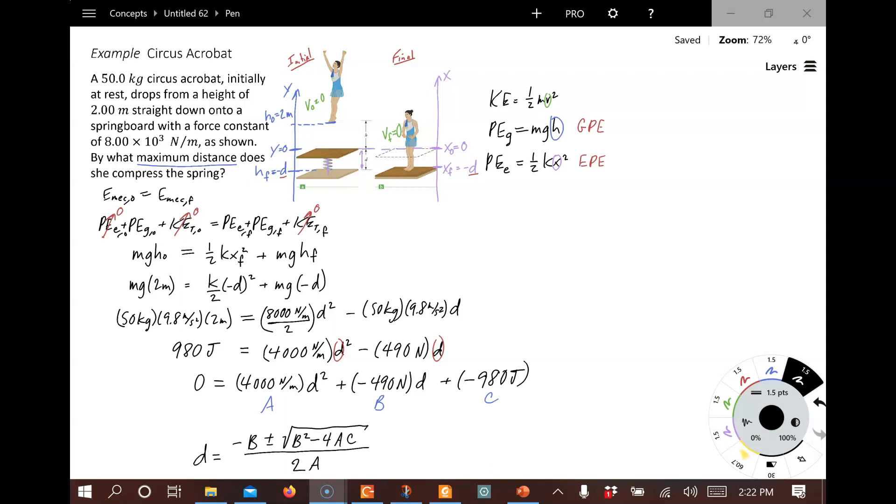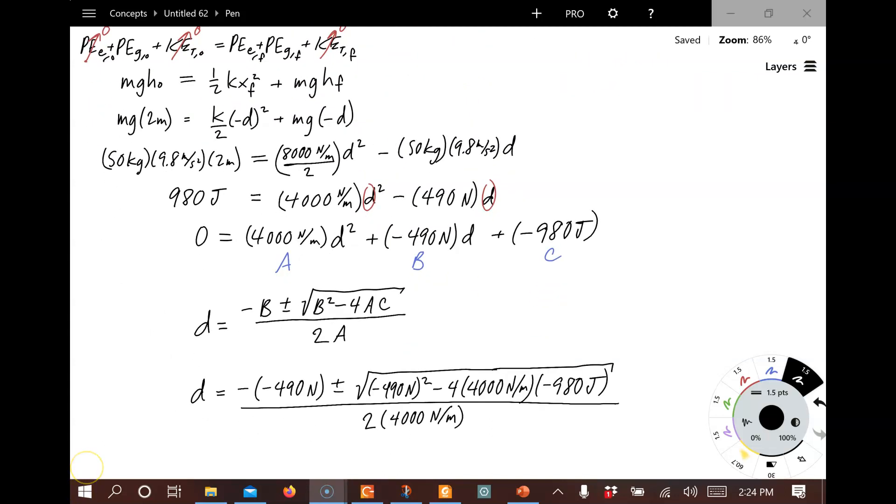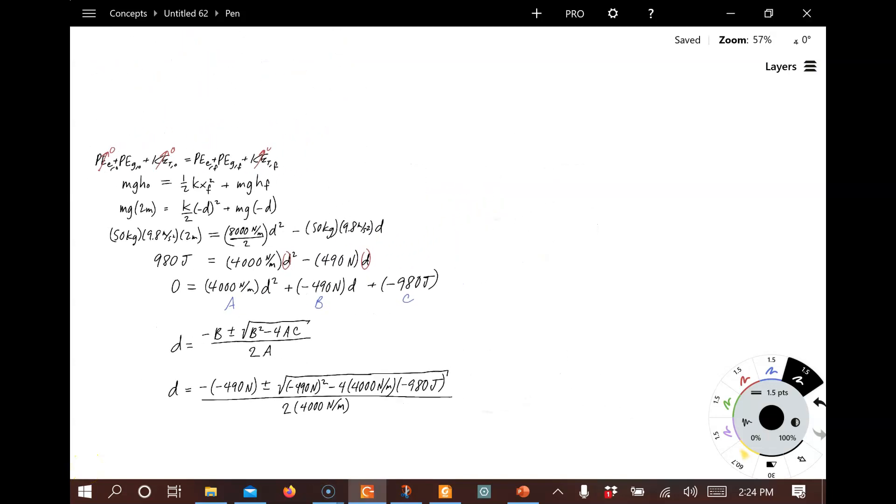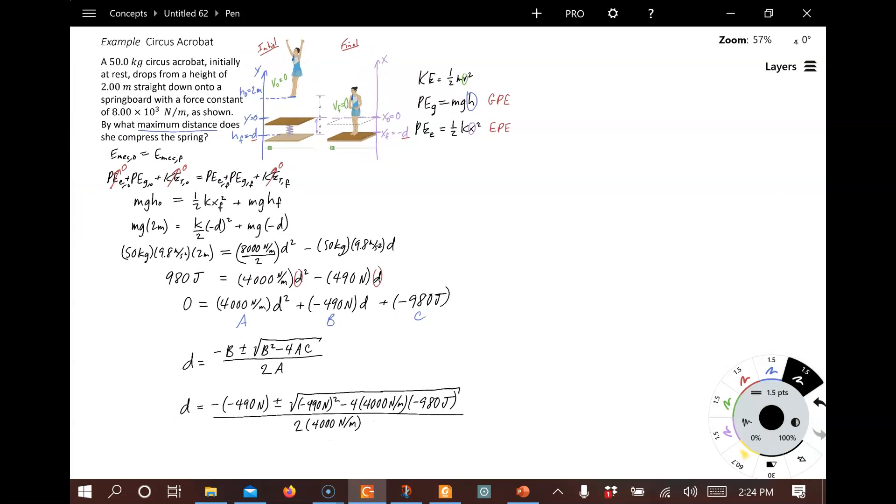So here's the quadratic equation and let's plug our numbers in. So we've plugged in all our numbers here. And let's see what these come out to. So I get two values for D. I get a negative 0.4375. And I get a positive 0.56.